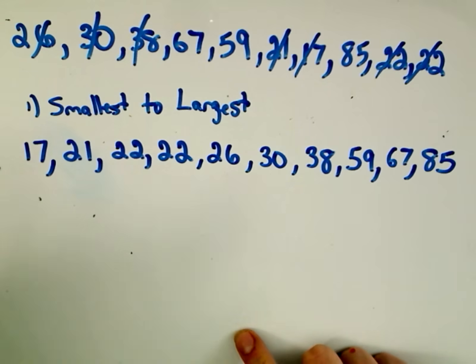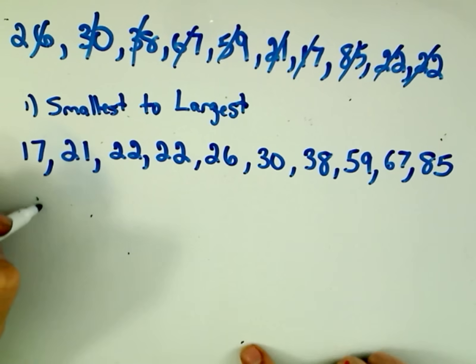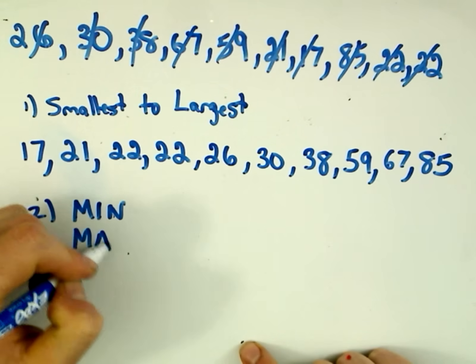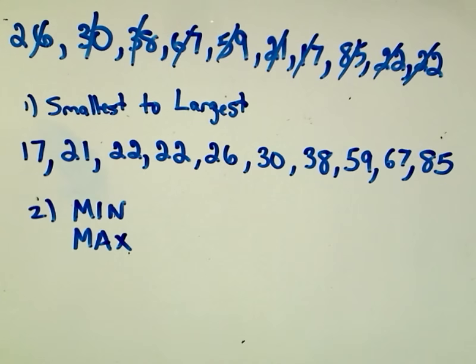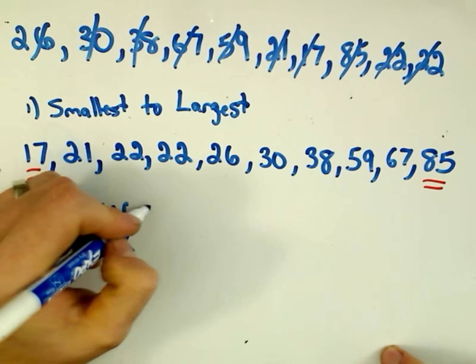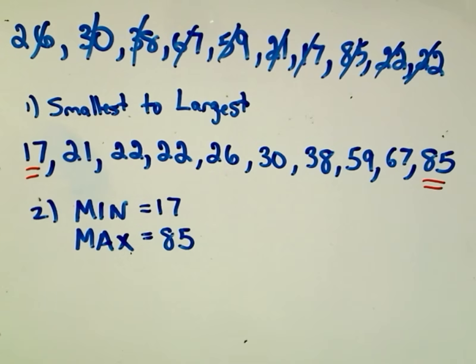Okay, so now we've got them from smallest to largest. Notice from this we can read off the minimum and the maximum. The minimum is just the smallest value we have, which is 17, and the maximum is going to be this value, 85. So that's what's going to go on the little wings of our box and whisker plot.